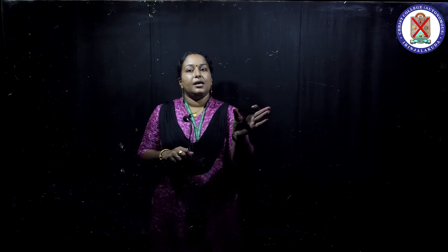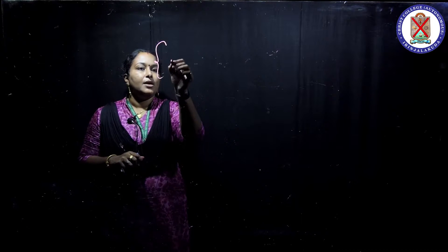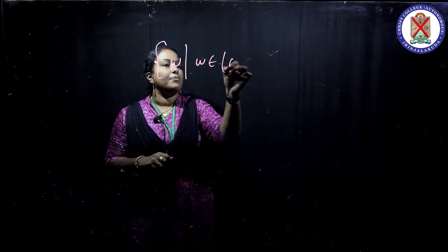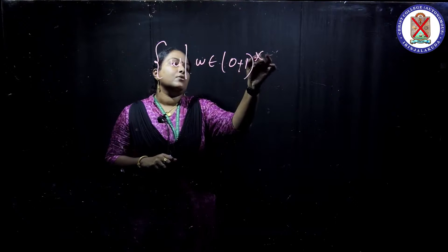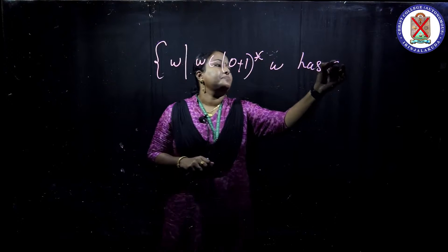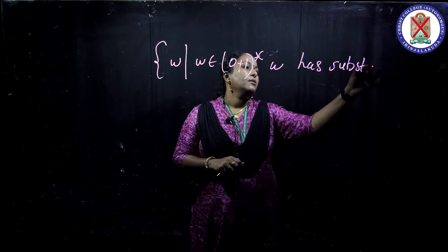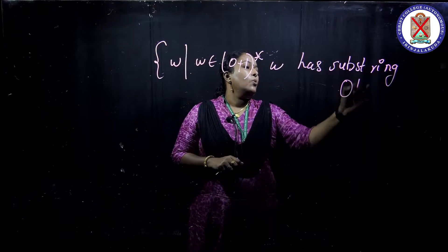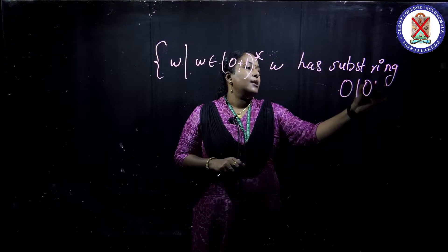Now in this video, we are discussing how to draw a DFA when a string is a substring. For example, W such that W is an element of (0+1)* and W has substring 0,1,0,1.